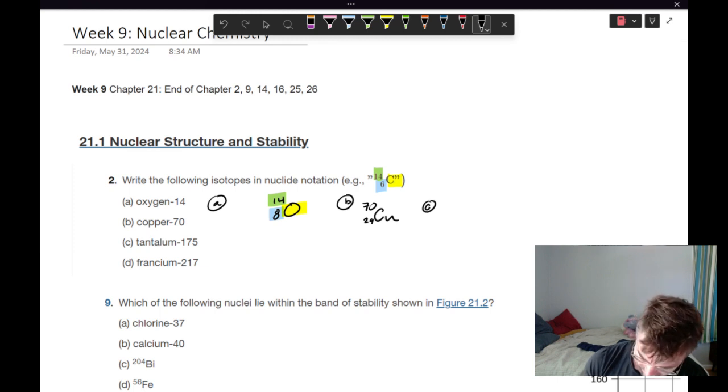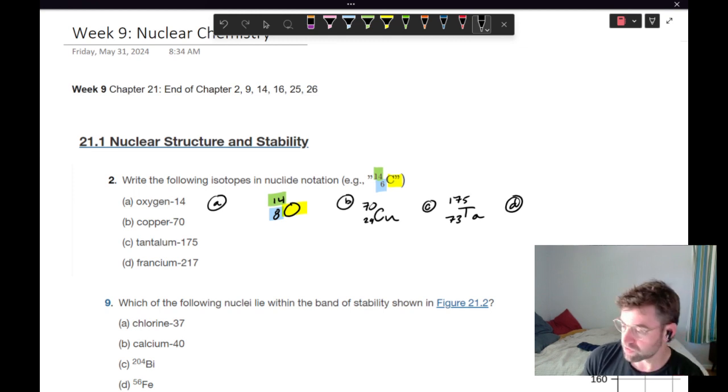Same thing. Tantalum-175. We've got Ta. Make sure you check your periodic table and look at this. 175 is our mass number. And 73 is our atomic number. Finally, we've got francium-217. This is Fr, 217. Check the periodic table. And that is an atomic number of 87.